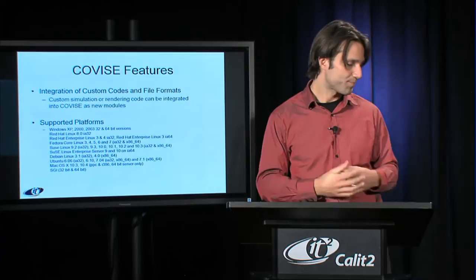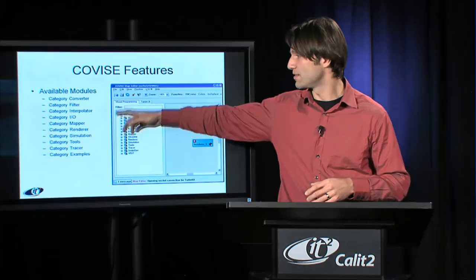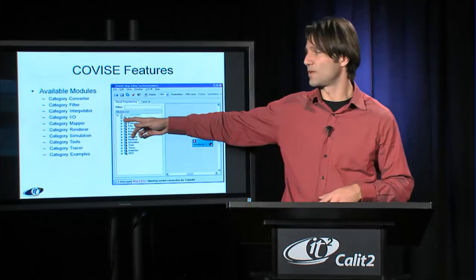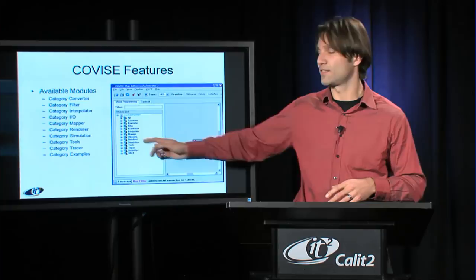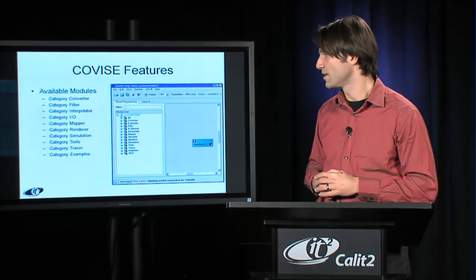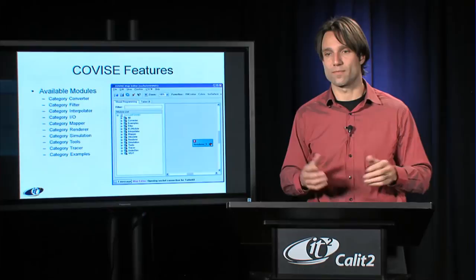Here's another overview of the module categories available. We have converter modules, filters, interpolators, I/O modules, and mapping modules that map one type of data to another. There are two renderers, simulation modules that can connect to simulation engines or simulate directly in Covice, and 3D tracers for particle tracing — you can do streamlines, ribbons, and all kinds of similar things. There are also example modules that show you how to write your own module.